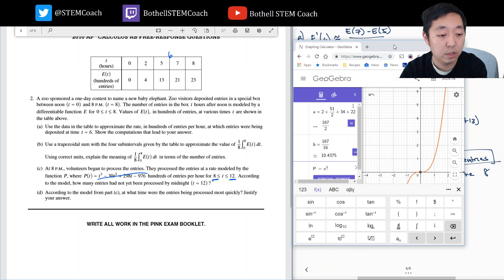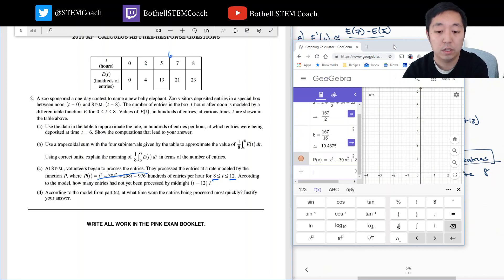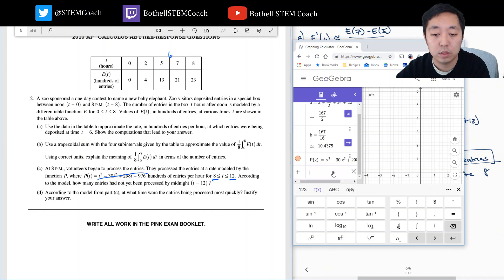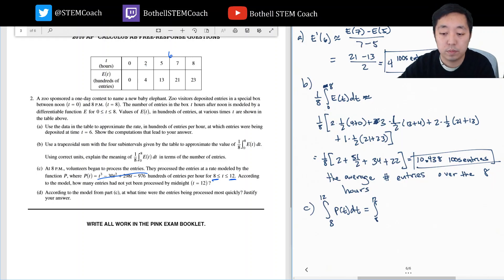So let's say P is equal to, let's put in the equation, x cubed minus 30x squared plus 298x minus 976. So integral of P between eight and twelve. Sixteen. Now this is how many they processed. They processed six hundred sixteen hundreds of entries. So but what we have here is the number of entries is 23. So 23 minus 16 is seven hundreds of entries.